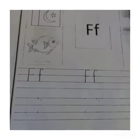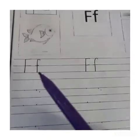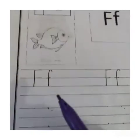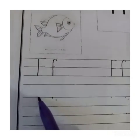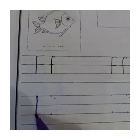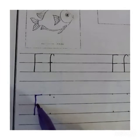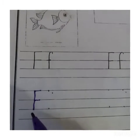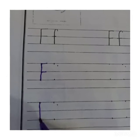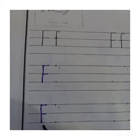Reading karne ke baad, ab hum yahan par writing work start karenge. Sabse pehle hum yahan par capital F likhenge, aur usi ke saath hum small F likhenge. Sab bachche dekhen — dot ke upar pencil rakhni hai aur third dot ke saath match karna hai. Yahan par ek line, aur second line mein bhi ek choti si line lagani hai — yeh ban gaya capital F.